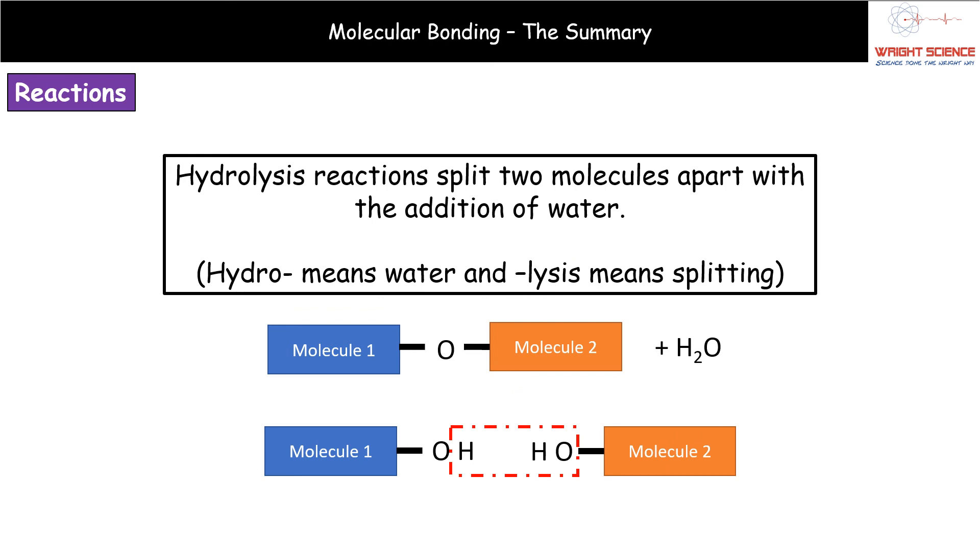The other reaction is kind of the opposite. We have a hydrolysis reaction. So, hydro, meaning water, and lysis, splitting. So, a hydrolysis reaction splits two molecules apart by adding water to it. We can see here we've got our molecule 1 joined to molecule 2. We're going to add the water to it, and as a result of that, we break the bond, and then we're going to just attach OH onto molecule 2 and the hydrogen onto molecule 1. So, what we've done there is, through adding water, we've split those two molecules apart.